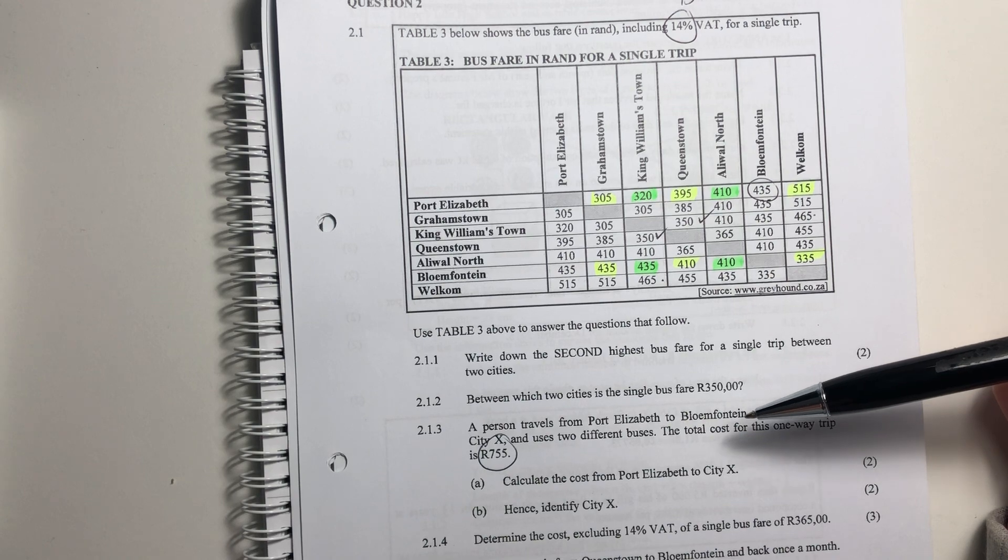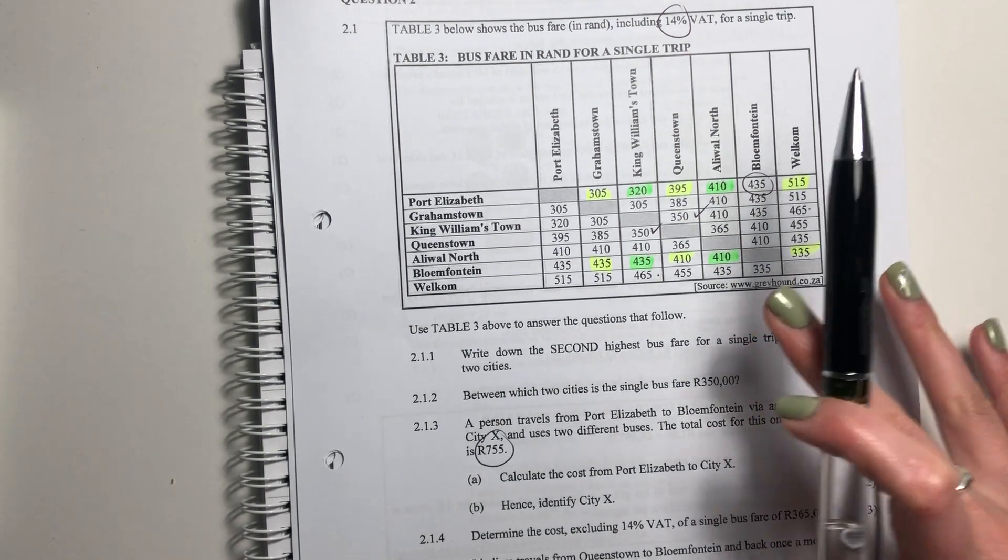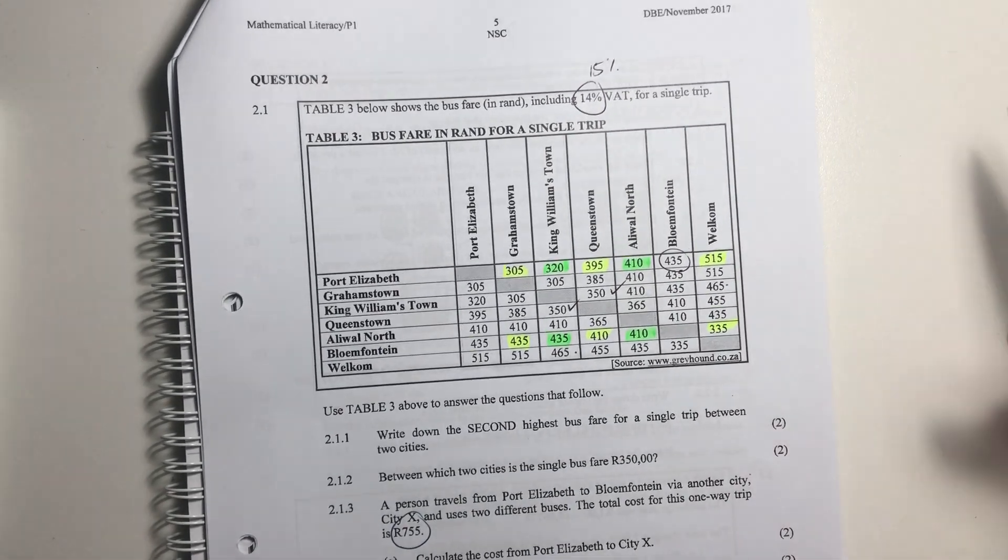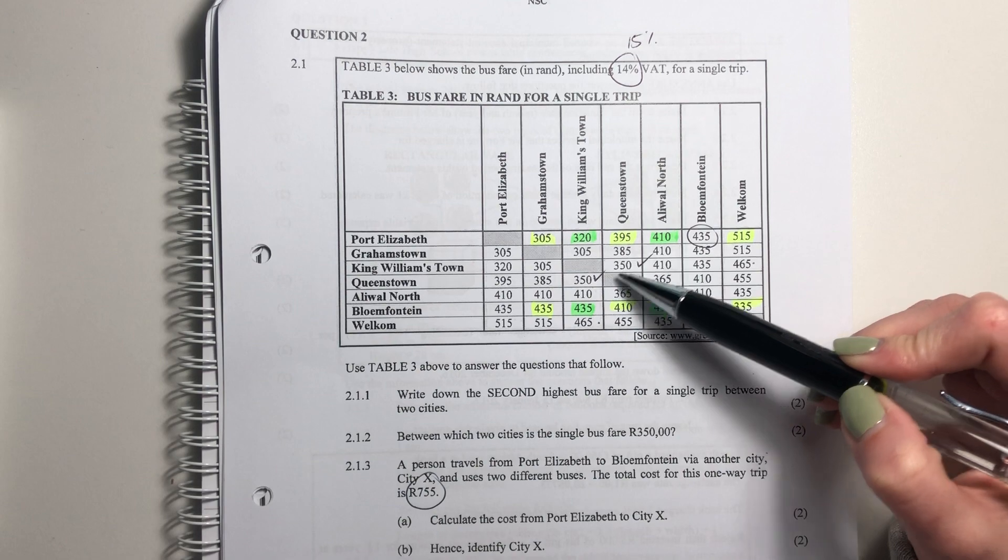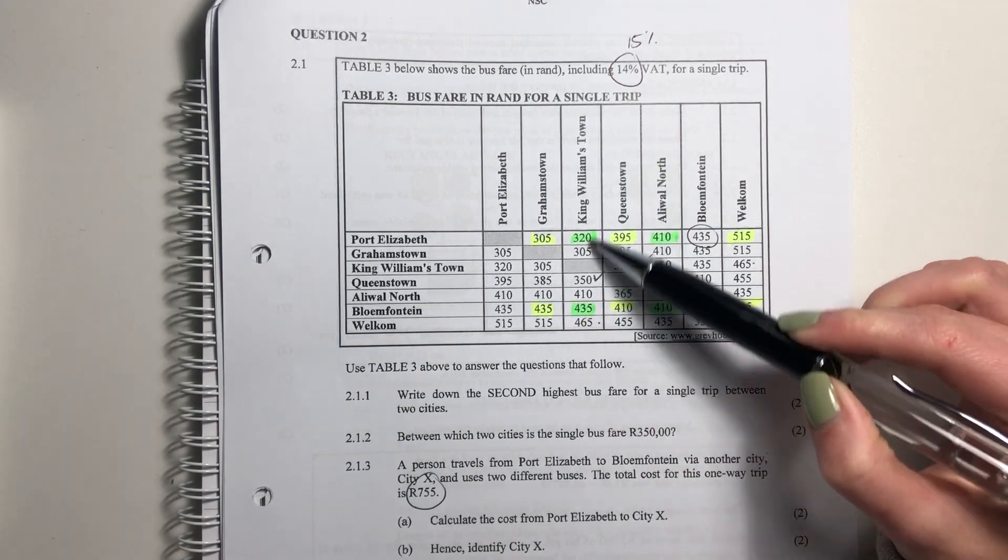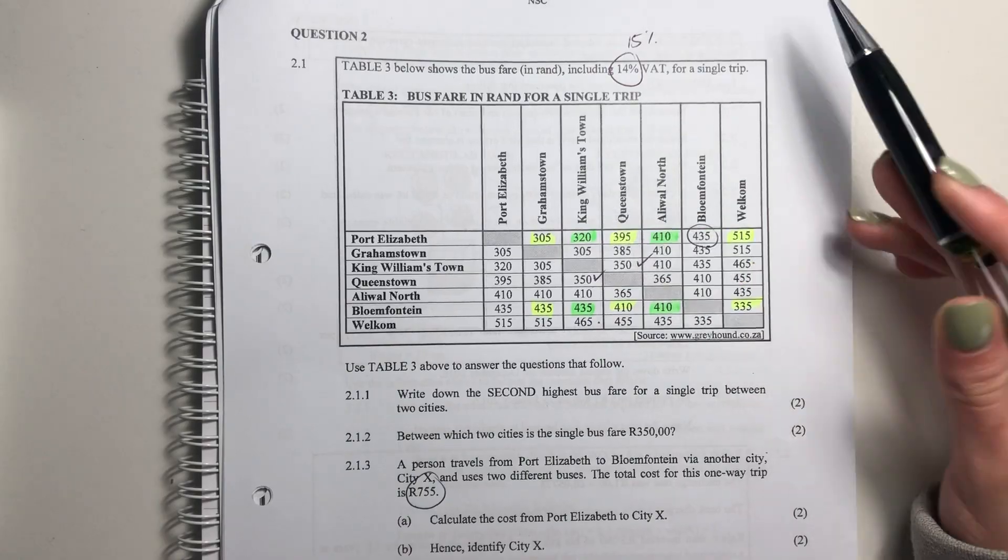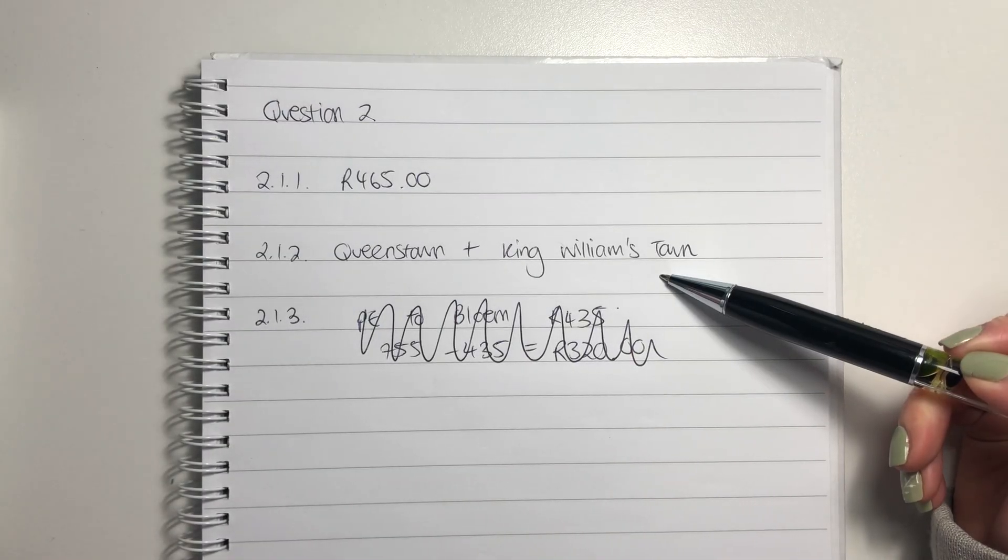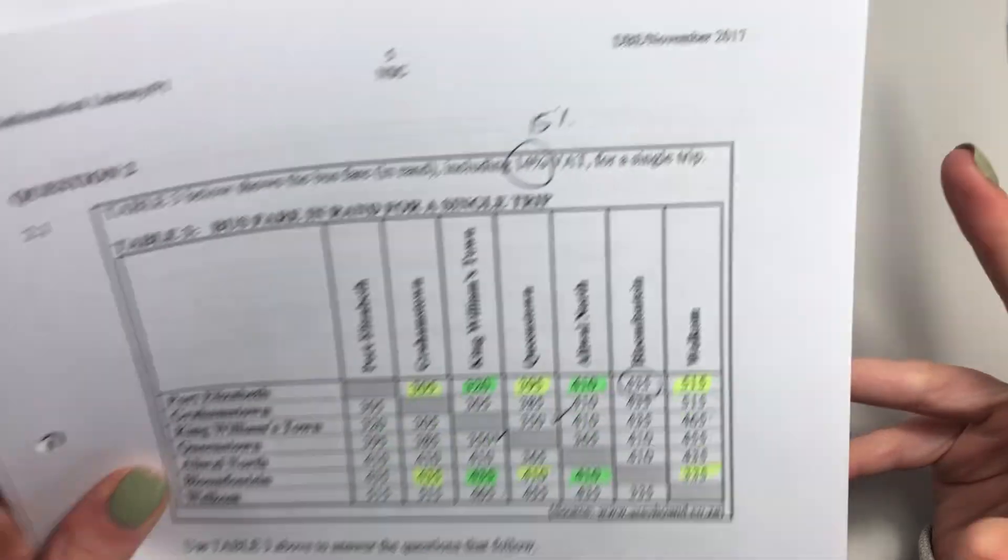Then it says, between which two cities is the single bus fare 350 rand? Okay. So let's look here. 350 rand. Queenstown and King Williamstown, right? Is there anywhere else? Look across, look across. No. It's Queenstown and King Williamstown. Write that out. Make sure that you spell it correctly because there's no excuse not to because the words are there for you.